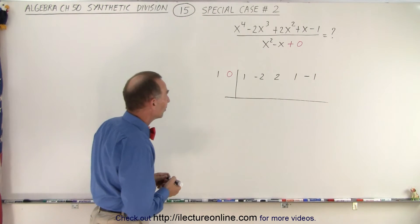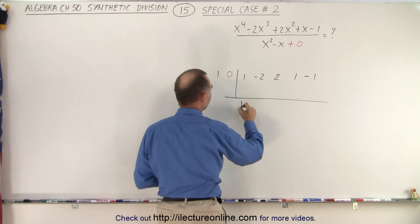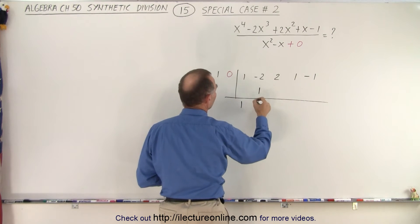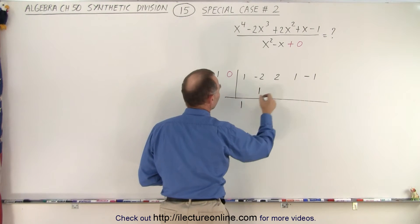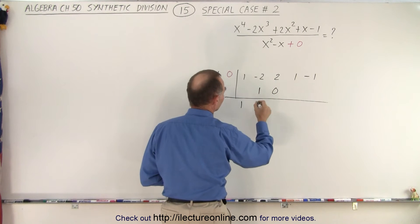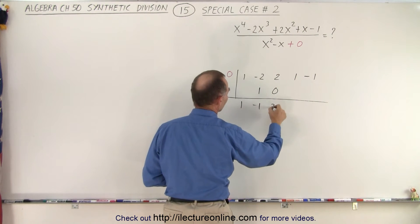The rest is exactly the same. We drop the first number down. 1 times 1 is 1 and 0 times 1 is 0. Then you add those two together so that becomes a negative 1 and this becomes a 2.